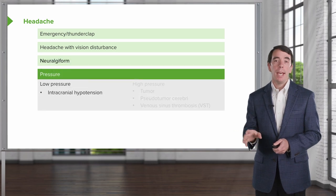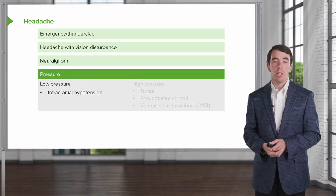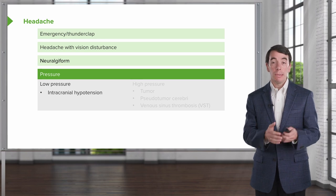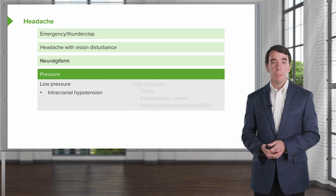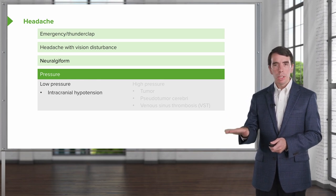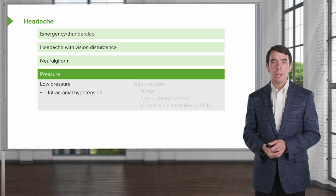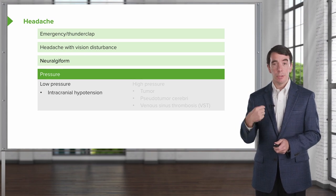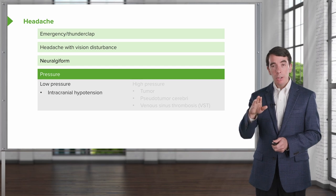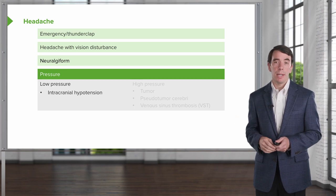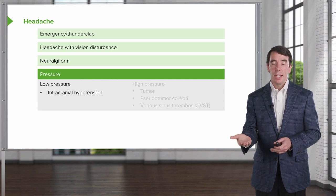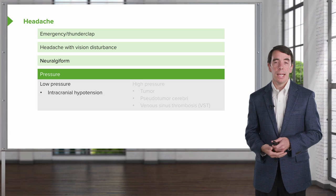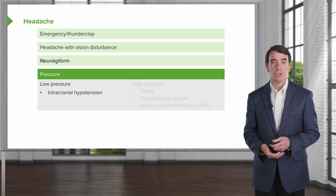What about the pressure headaches? There can be low pressure and high pressure headaches. Low pressure typically comes from intracranial hypotension — too little CSF in the cranial vault. That can develop from a dural tear in the spine, and the spinal fluid slowly leaks out. With less CSF in the cranial vault, patients present with low pressure headaches: when they stand up, the headache is bad; when they lie down, the headache is much better — that positional component.